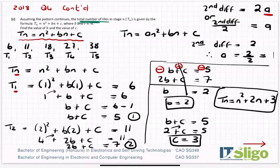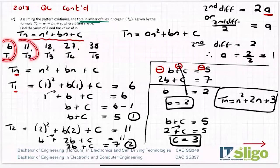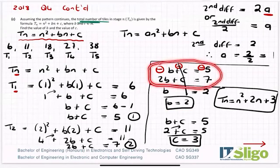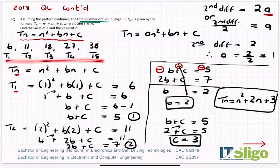I could have used any terms here — I could have used t3 because I knew that was 18, so n would become 3 and you let it equal 18. I could have used t4 or t5. The reason I use t1 and t2 is because the numbers are smaller and therefore the maths is easier. My recommendation is to use the lower numbers, but you're going to get the exact same values for b and c no matter which of the five terms you use.